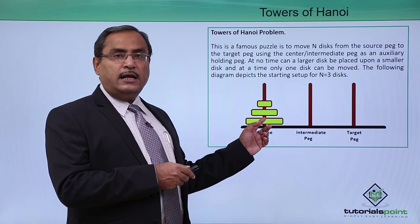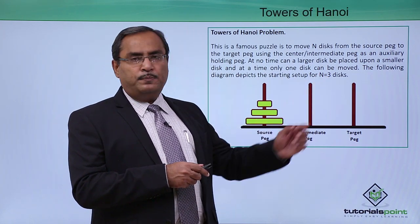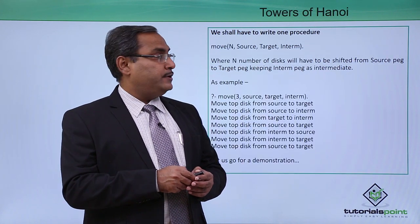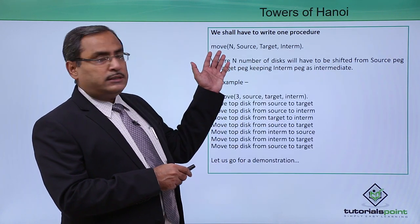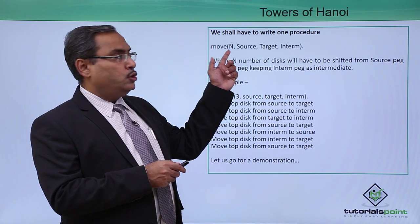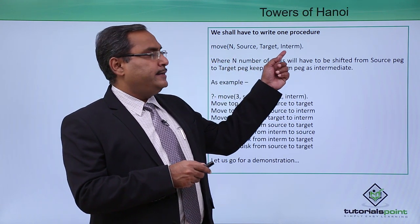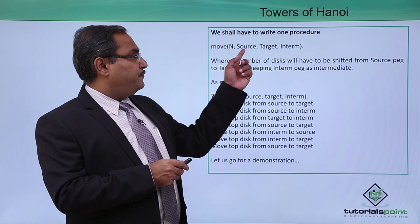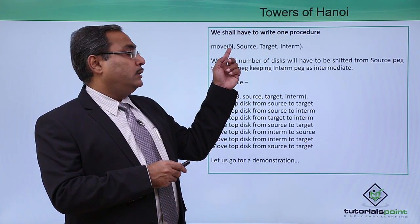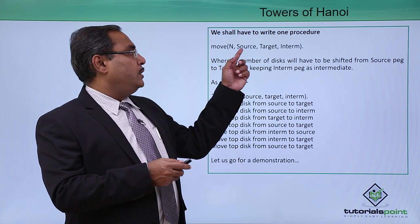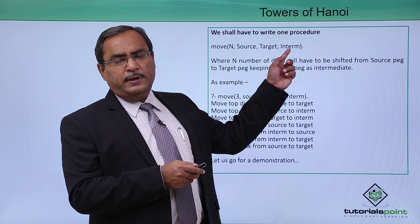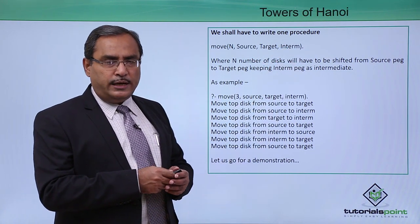We have considered the value of n, that is the number of disks, equal to 3. We are supposed to write one procedure: move(N, Source, Target, Intermediate). The first argument is the number of disks to be moved, then source, target, and the intermediate as the auxiliary peg.